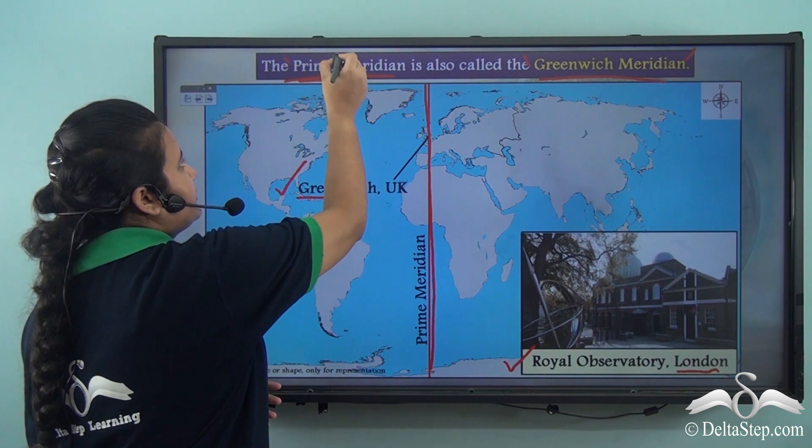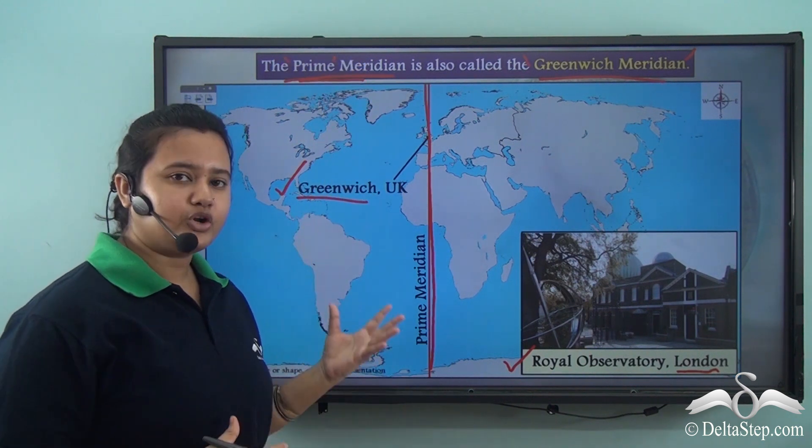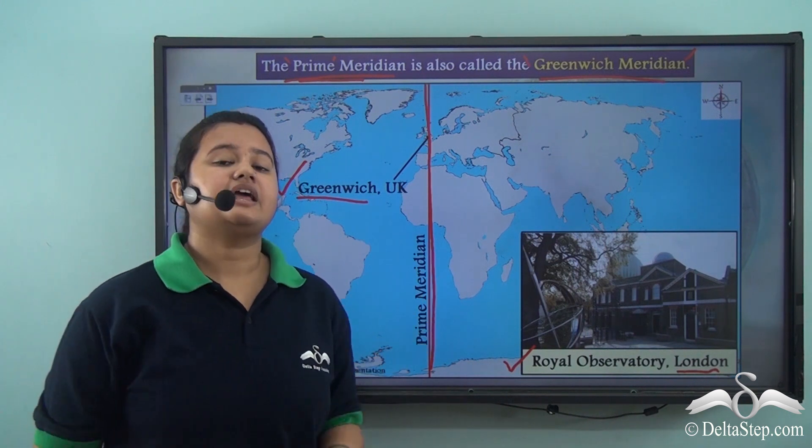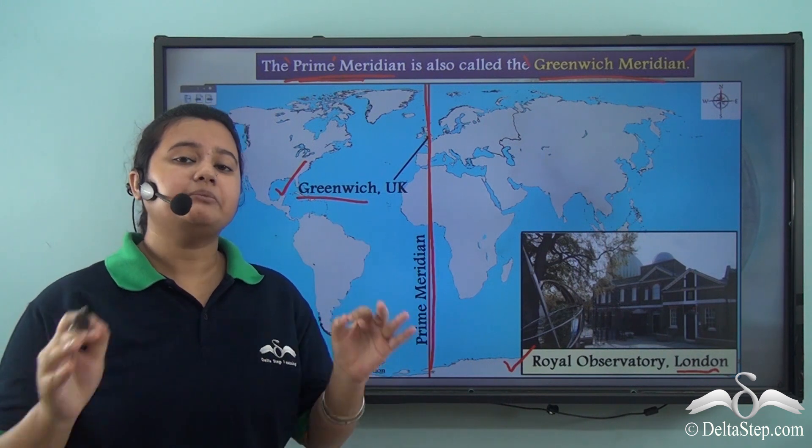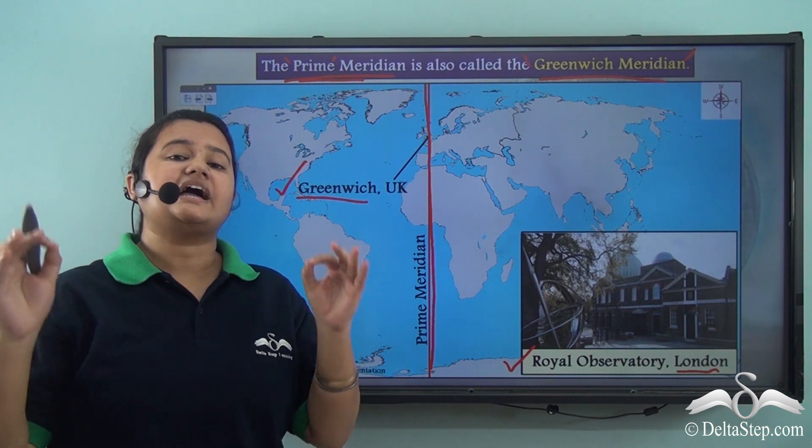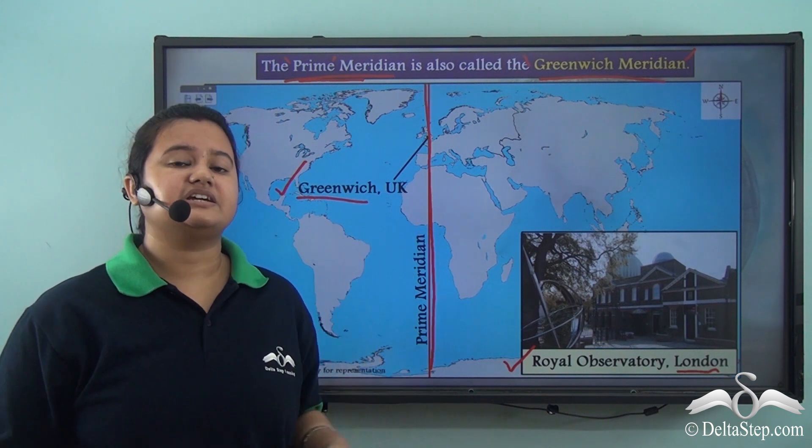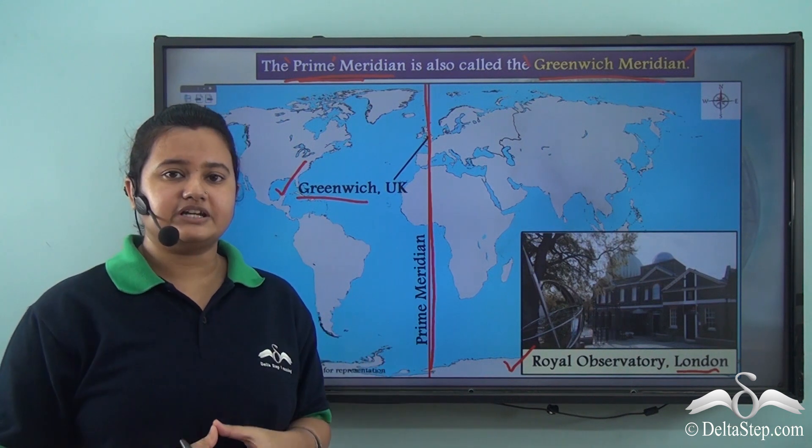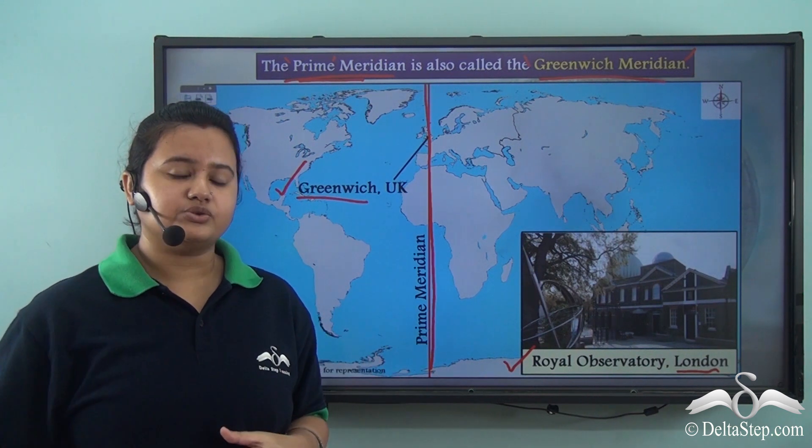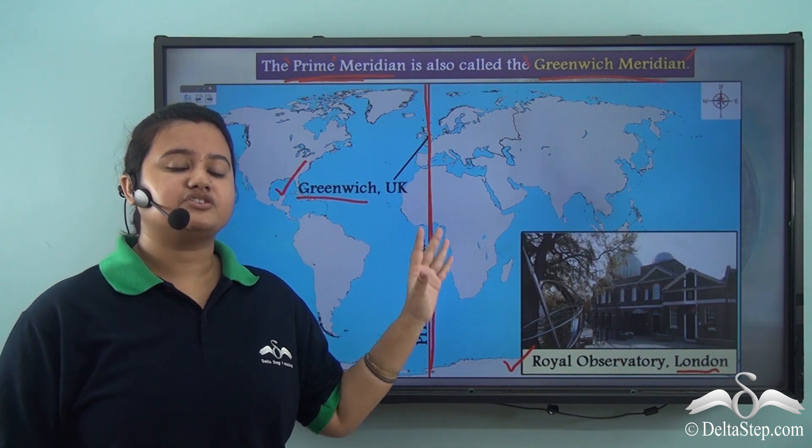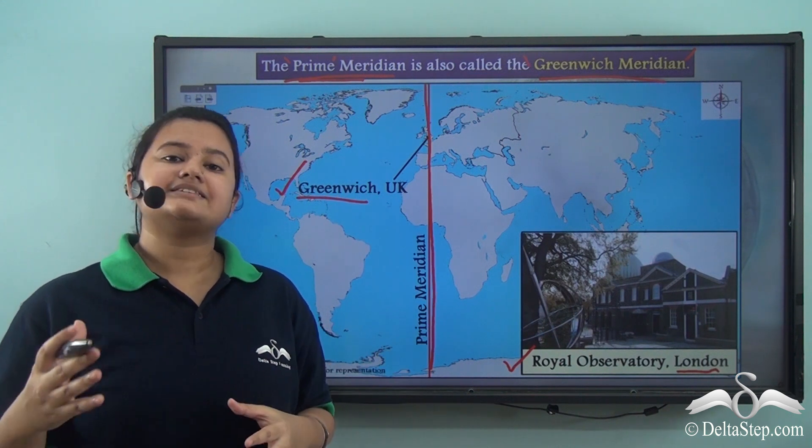As I mentioned Greenwich Meridian is another name for prime meridian. The word prime itself means important. So, this meridian is known as prime meridian because it is an important line of longitude. Prime meridian is a reference meridian and all other longitudes are drawn with reference to this line.